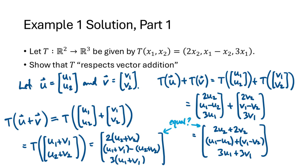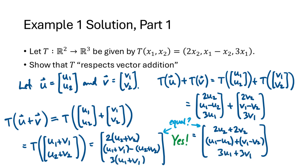We compare the two vectors entry by entry. In the first entry, 2(u2 + v2) equals 2u2 + 2v2 by distributing the multiplication. In the second entry, (u1 + v1) − (u2 + v2) equals the same expression after distributing the negative and rearranging. The third entries are similarly equal after distributing the multiplication by 3. So yes, the two vectors are equal — but that's not enough on its own to show linearity. We still need to show T respects scalar multiplication.